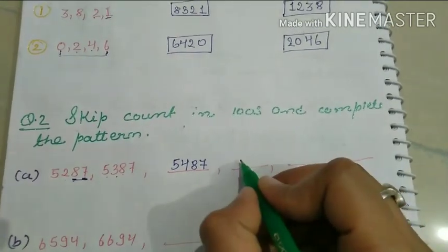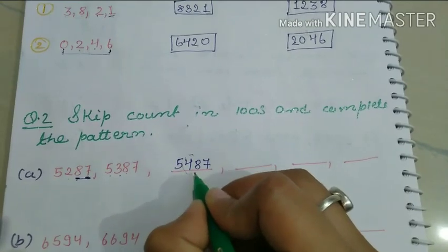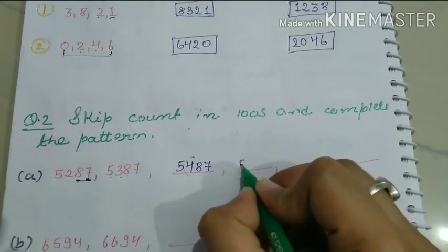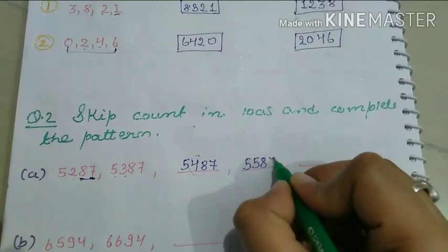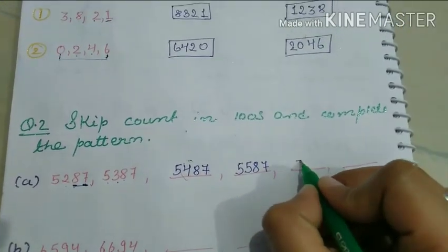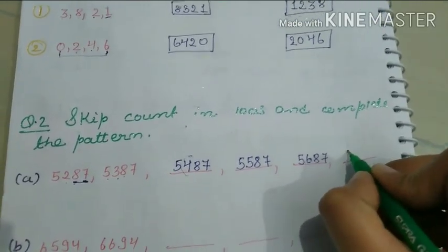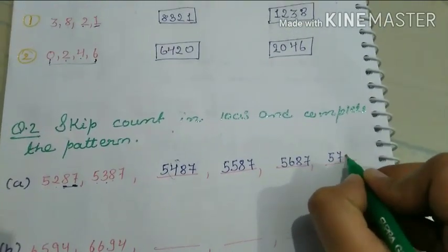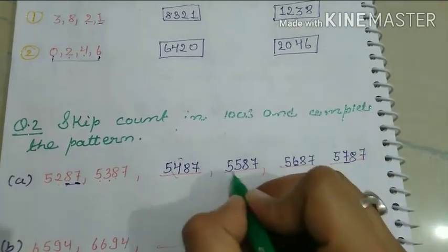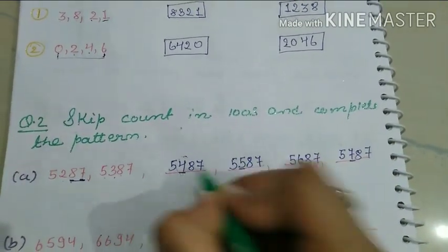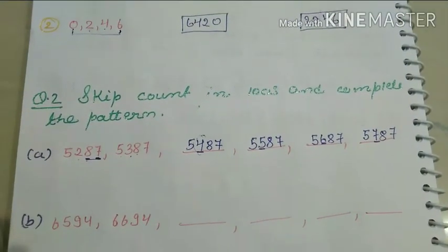Continuing the pattern, we change only the digit at the hundreds place. After 4 comes 5, after 5 comes 6, after 6 comes 7. The tens and ones digits remain the same throughout.